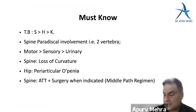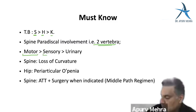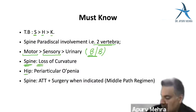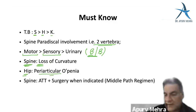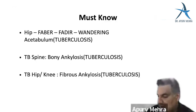Remember: TB affects the spine, then hip, then knee — going up from below. It always involves two vertebrae. As neural deficit sets in, motor loss occurs first, then sensory loss, and bowel/bladder involvement is last. When bowel and bladder are involved, operate. The earliest radiological sign is loss of spinal curvature. The treatment is anti-tubercular therapy (ATT) plus surgery when indicated.